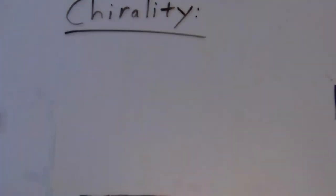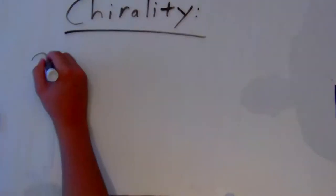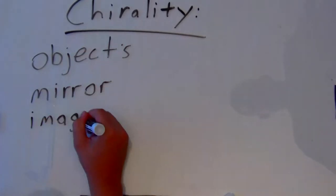Chirality is defined as when an object's mirror image is not superimposable upon itself. This may be a bit difficult to understand, so let me illustrate by using a few objects to explain.